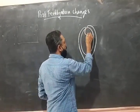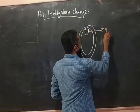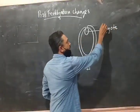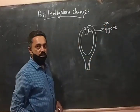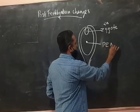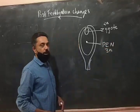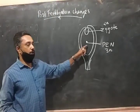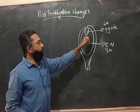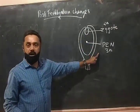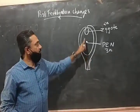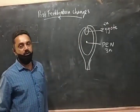The most important product of fertilization is the zygote — a diploid zygote. Another product is the primary endosperm nucleus. The triploid primary endosperm nucleus is another product of triple fusion. So fertilization results in the formation of a diploid zygote and a triploid primary endosperm nucleus. The antipodals may also disappear after fertilization.